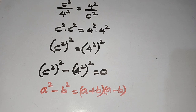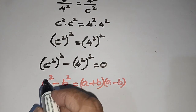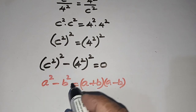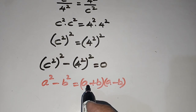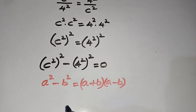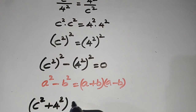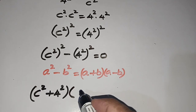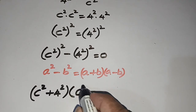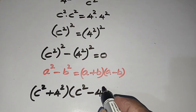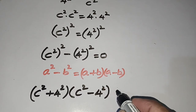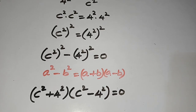Using this algebraic identity, where a = c² and b = 4², we can write (a+b)(a-b). So this becomes (c² + 4²)(c² - 4²) = 0.